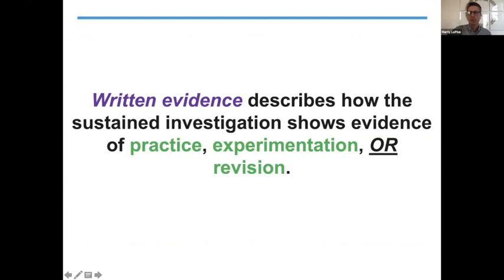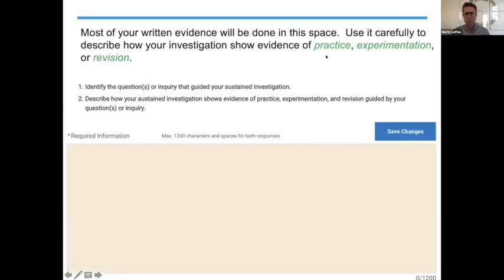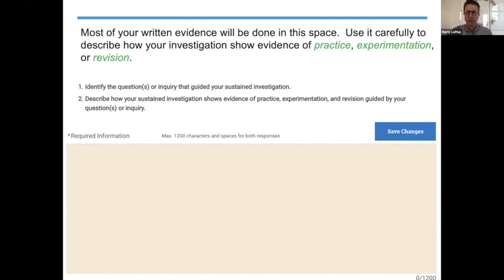The visual is only the first part — you do need to provide written evidence that describes evidence of practice, experimentation, or revision. You might not necessarily address all three of those, but you do need to at least address some of that in your written evidence. If you've logged in already and started to upload, you've got two parts to address: identifying the questions or inquiry for your sustained investigation, and then addressing specific works you may have done and how they reflect that initial inquiry.